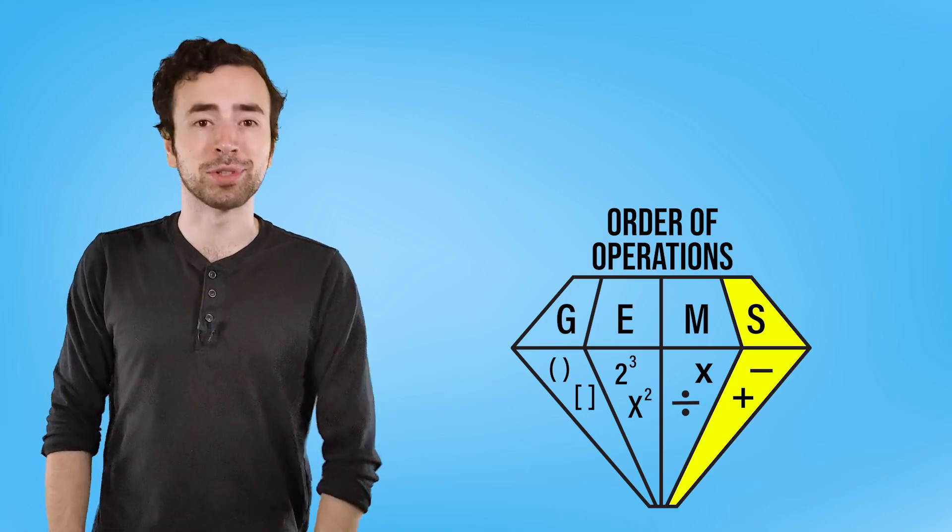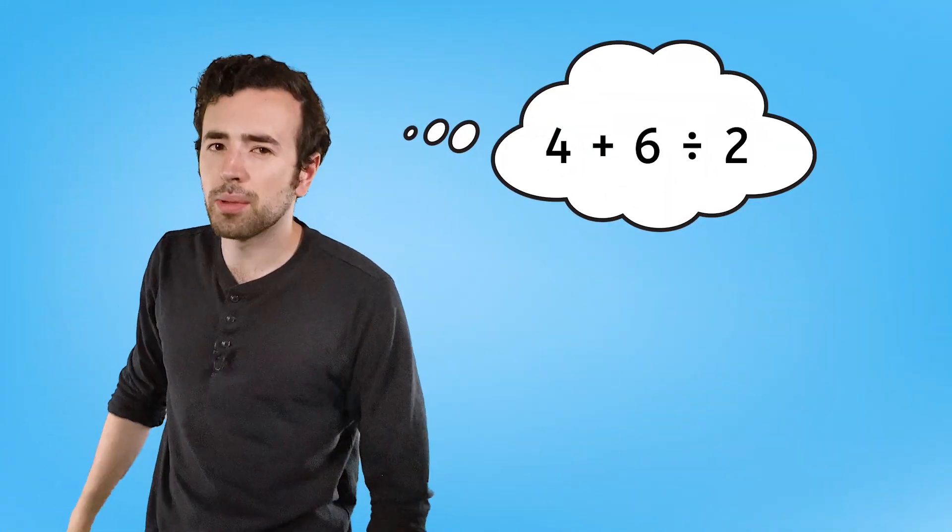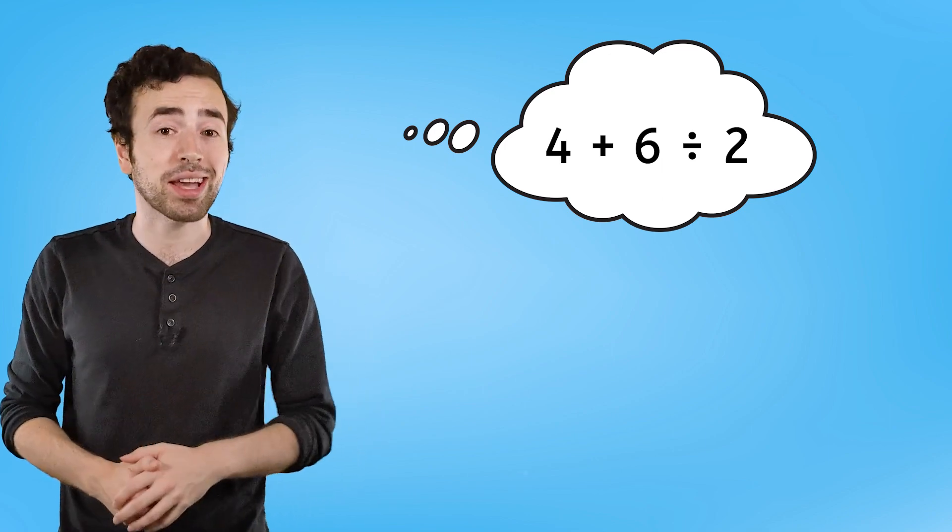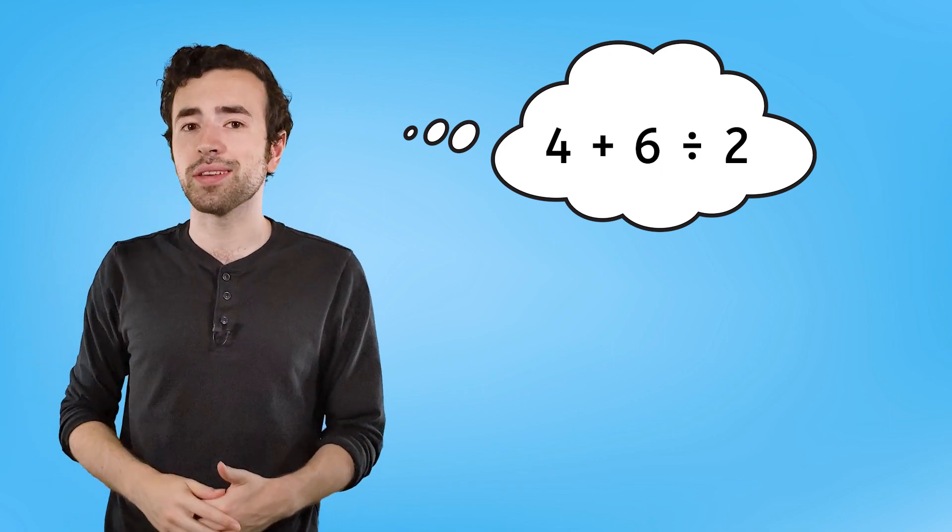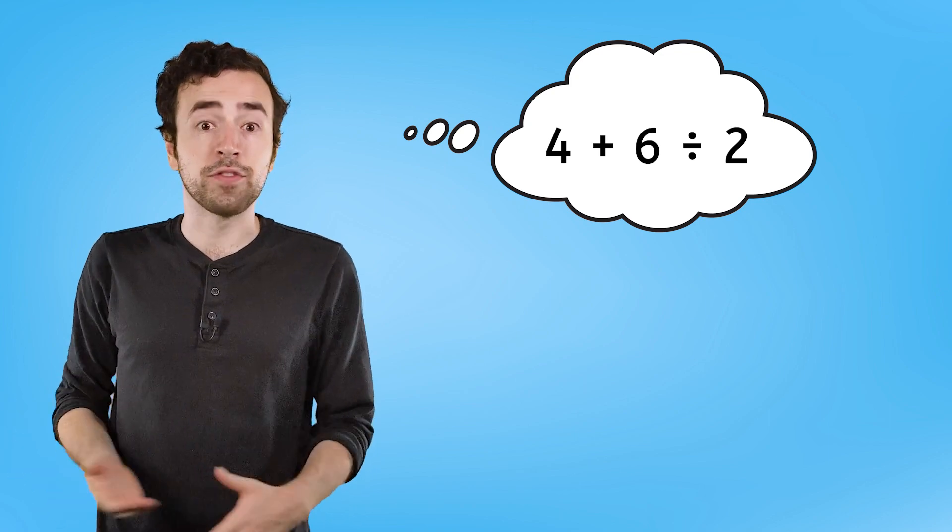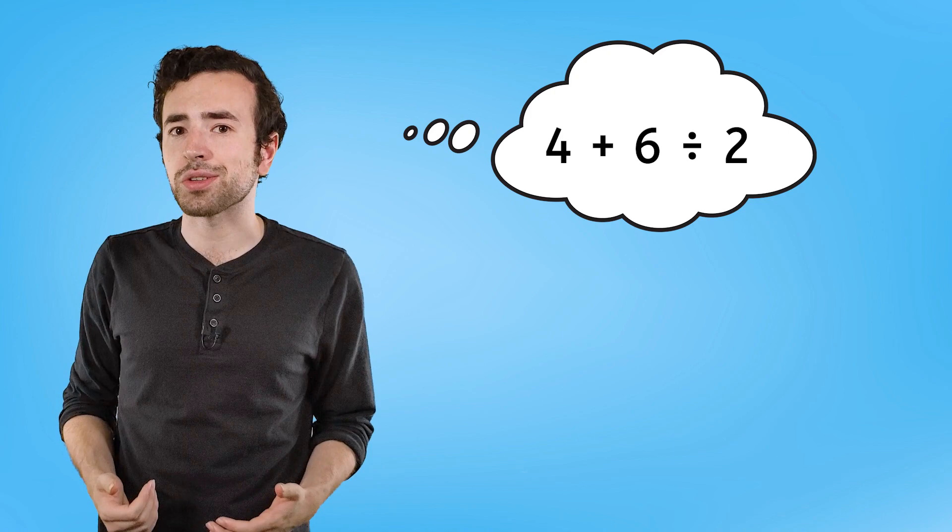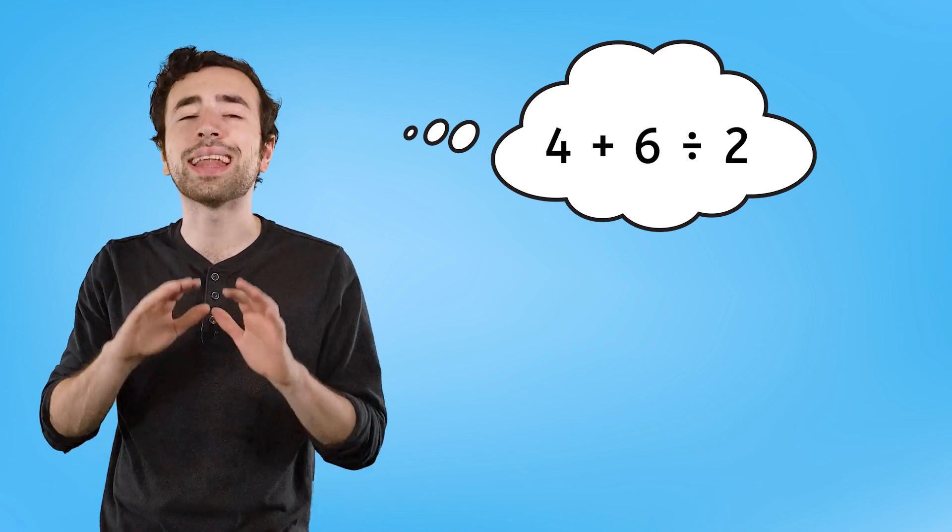So there you have it, GEMS. Remember the problem Mia and I were trying to solve at the beginning of the video? Despite correct calculations, the order in which we did them affected our final answers. If everyone solved math problems in any random order, we'd all have different answers and we wouldn't be able to agree on anything.